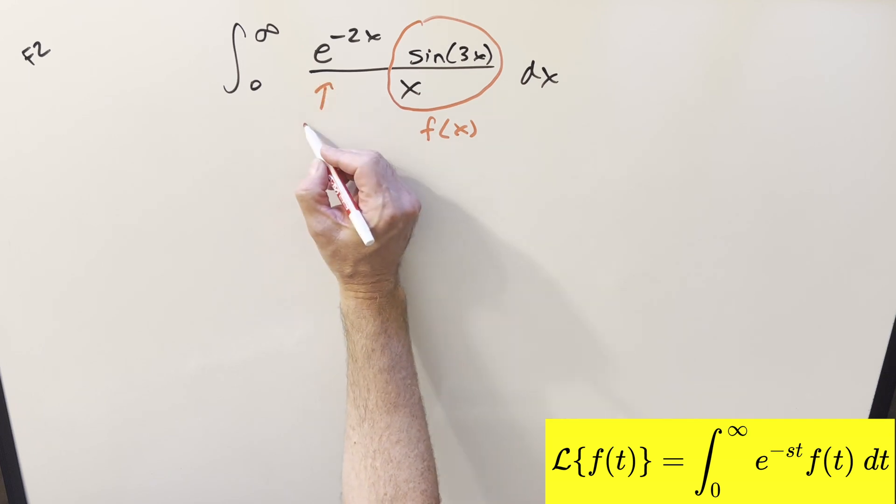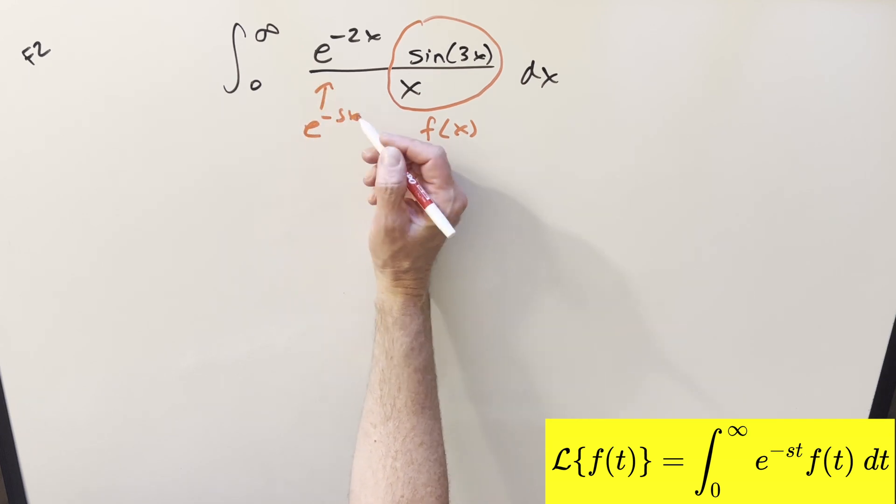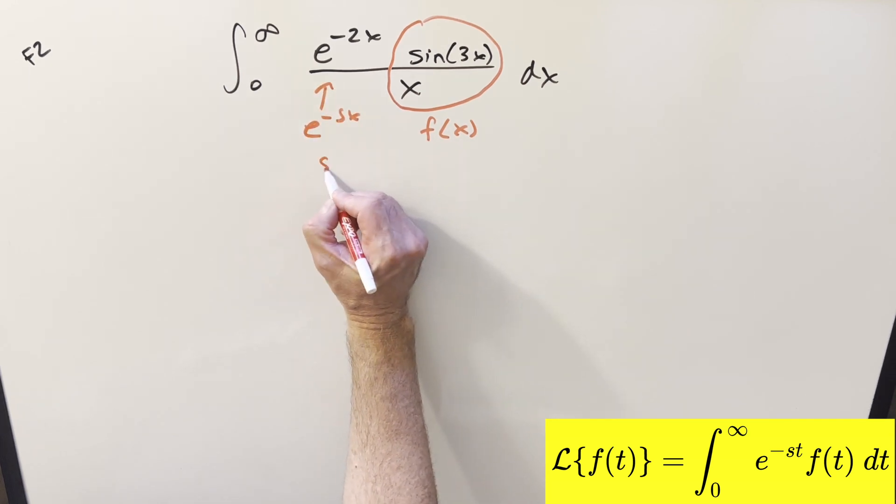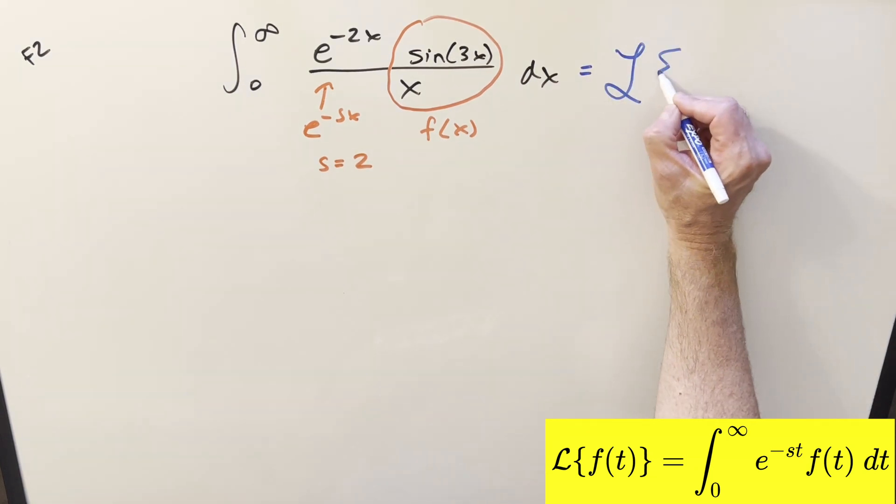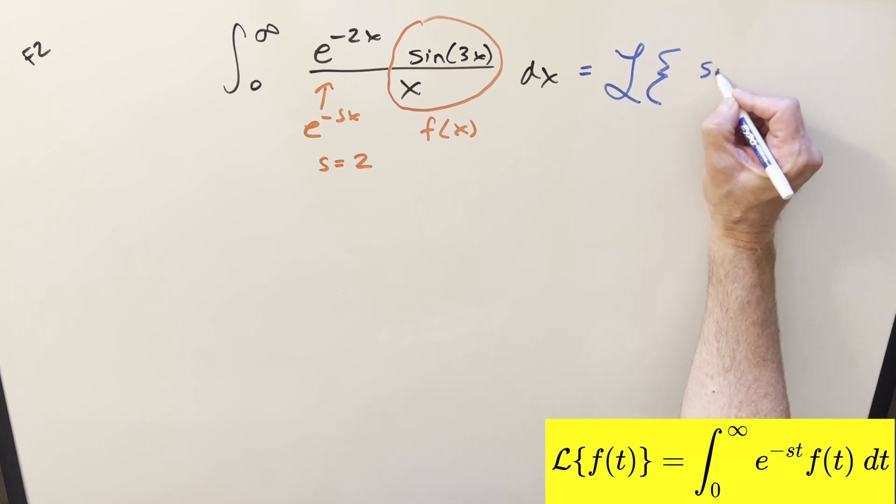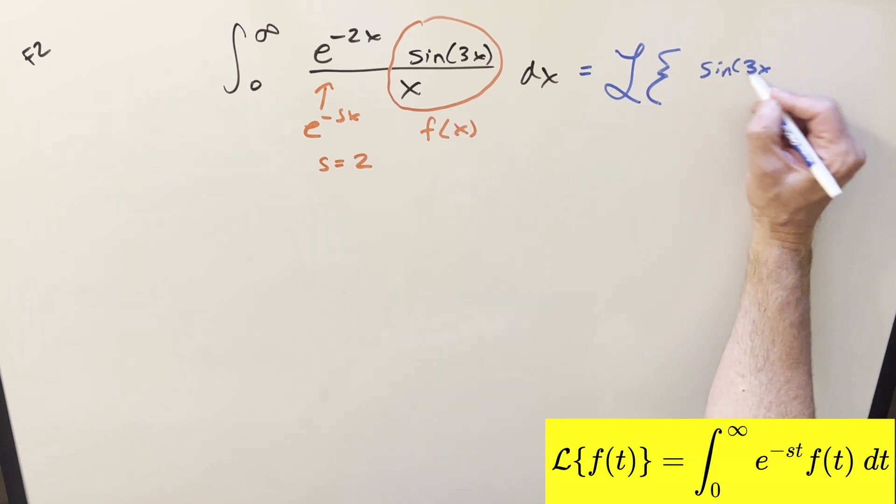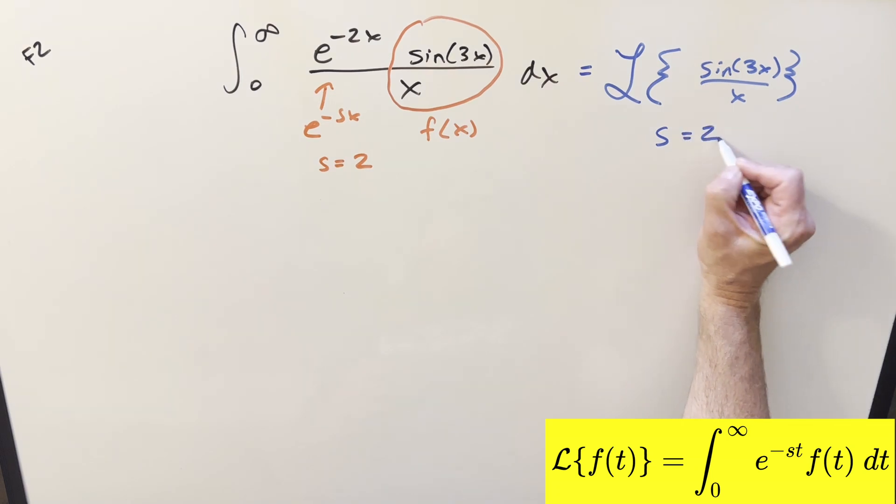So we'll call this our f of x over here. In the formula, this right here, this is going to be our e minus sx, but what we're saying is our s value is just going to be equal to 2. So the way we can think about this is we can write this as just the Laplace transform of sine 3x over x. And we just need to remember that s is going to be equal to 2.